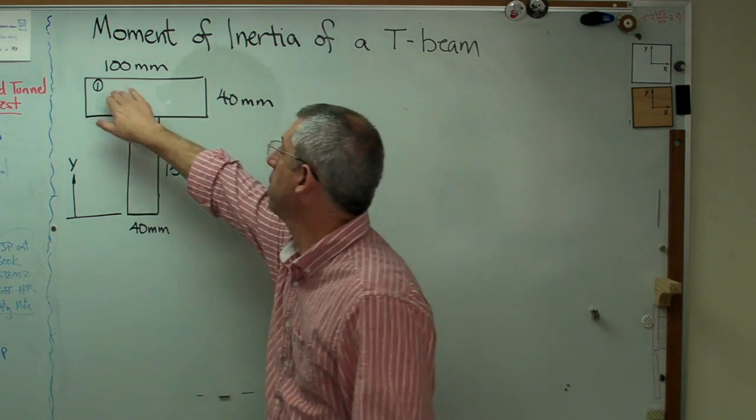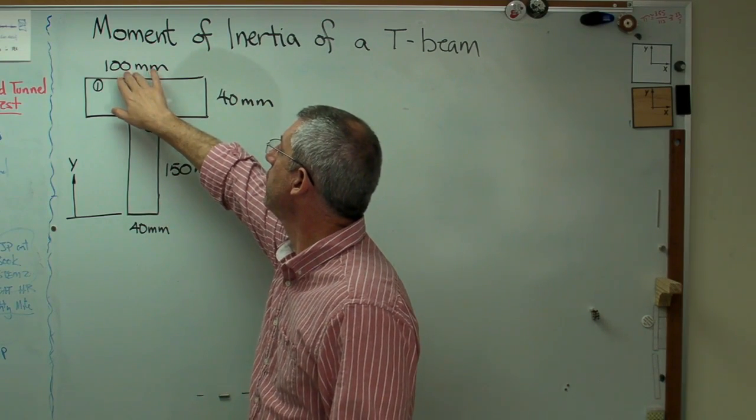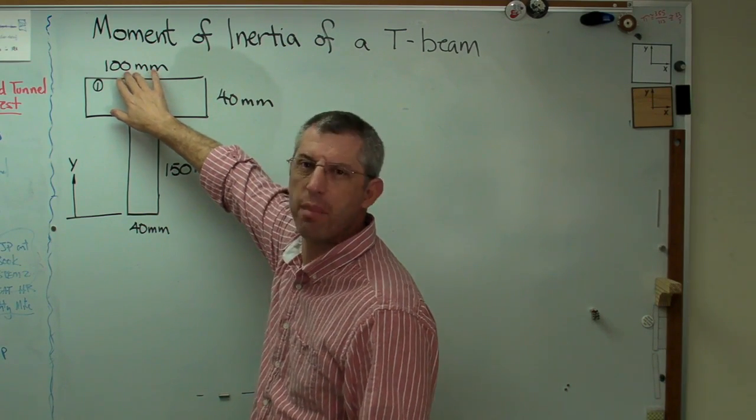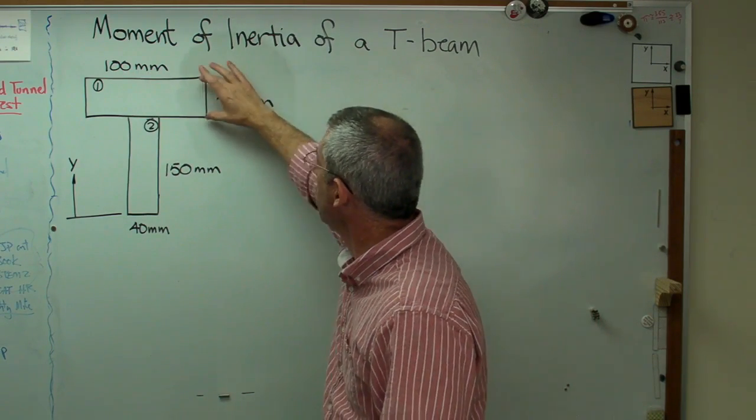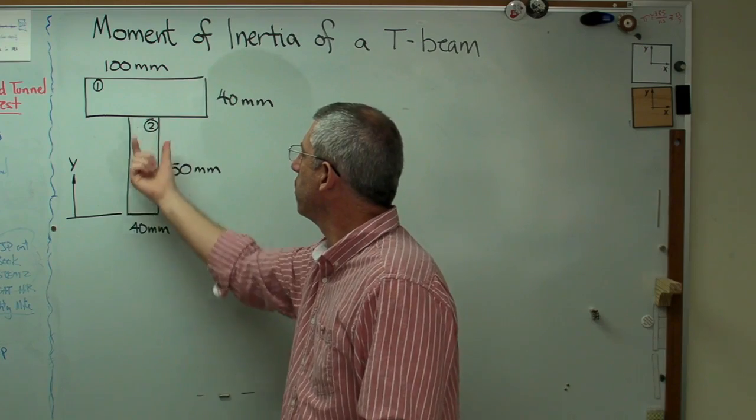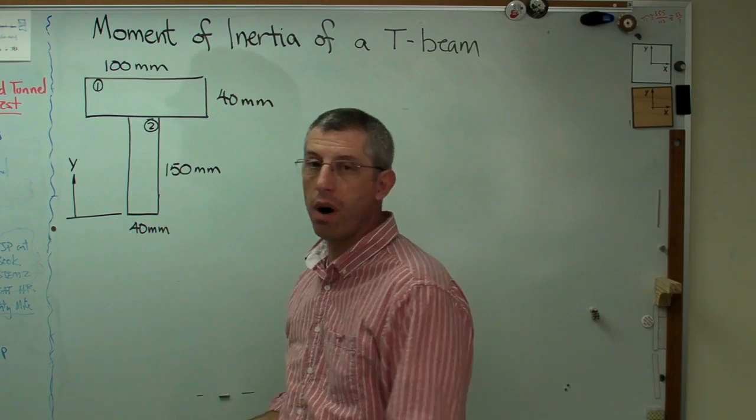It's made out of two boxes here, and I've numbered them box one and box two. The width of the top section of the beam, the cap if you want to call it that, is 400 millimeters. It's 40 millimeters thick, and the web or the stem here is 150 millimeters high and also 40 millimeters wide.